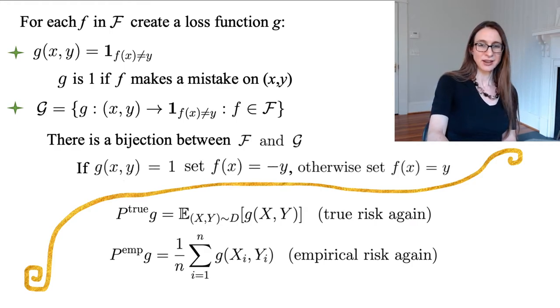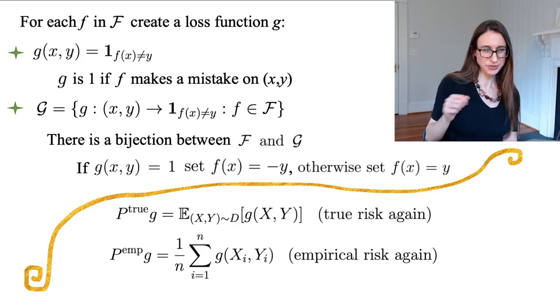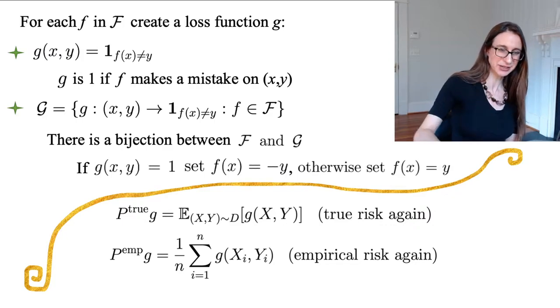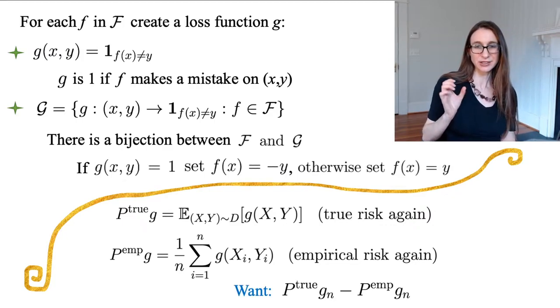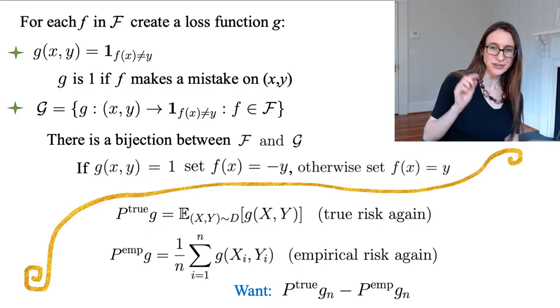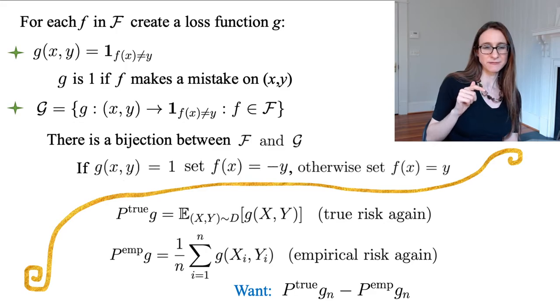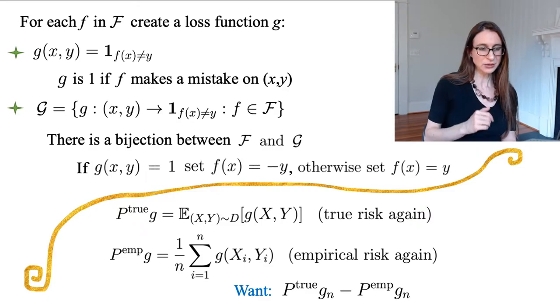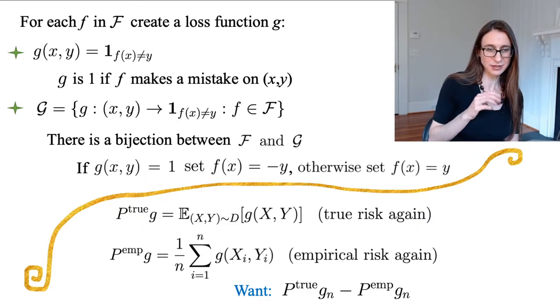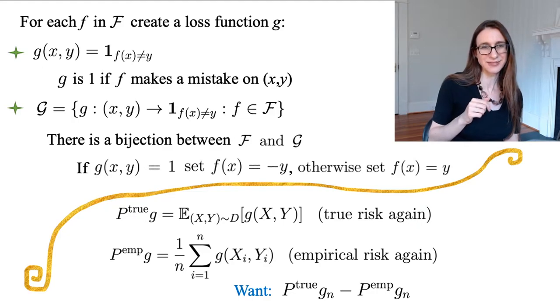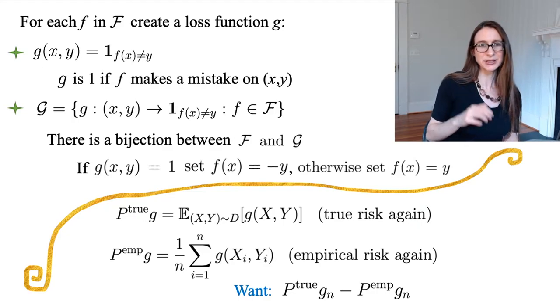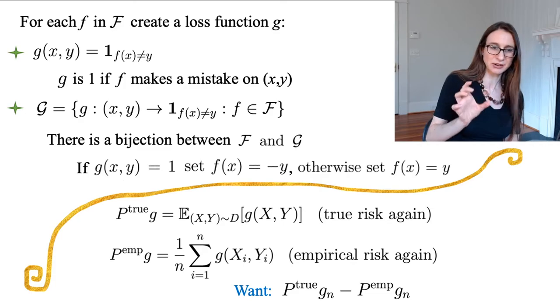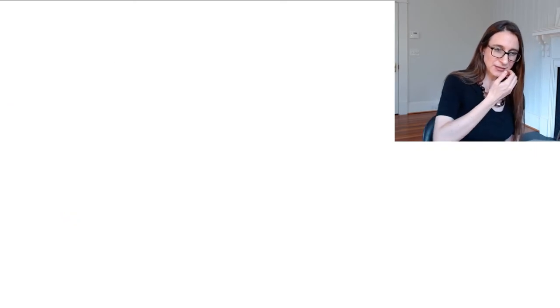In our new notation, I'm writing the true risk as P^true of g, and then the empirical risk is P^emp of g. So that's the true risk and the empirical risk. And remember, the thing we want to be close is the true risk on g_n. G_n is the loss version of f_n, which was a function we got from modeling data in the last video. So we want the true risk of g_n, which is actually the true risk of f_n, to be close to the empirical risk of f_n, or the P^emp of g_n, right? So this is just the generalization error, the difference between the true and empirical risks.